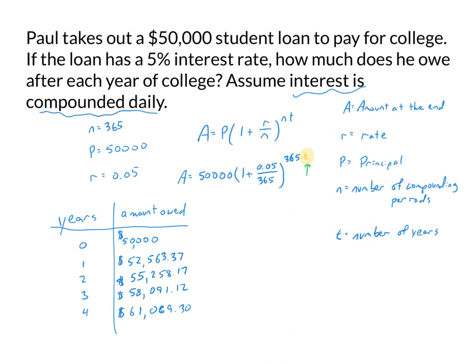Comparing annual and daily compounding, we end up paying a little bit more with daily compounding because interest is computed and added to the balance more often, so it's based on a larger amount. As an extra example: if you defer paying your loans for three additional years after college and substitute T=7 into the formula, your balance would be $70,951.68 — jumping up almost $10,000 more by not starting to pay it down. That is the end of this video on compound interest and student loans.